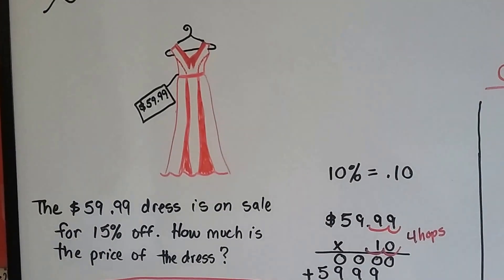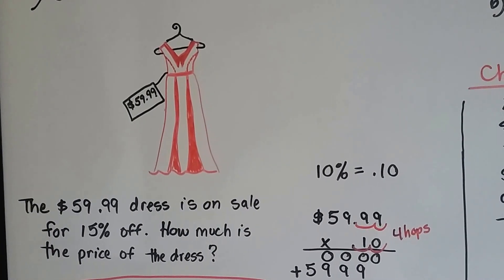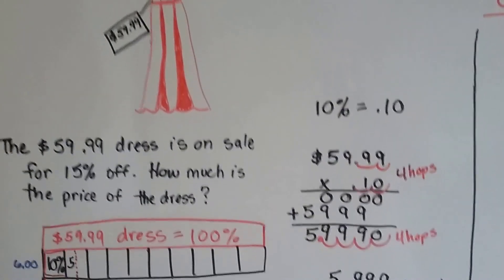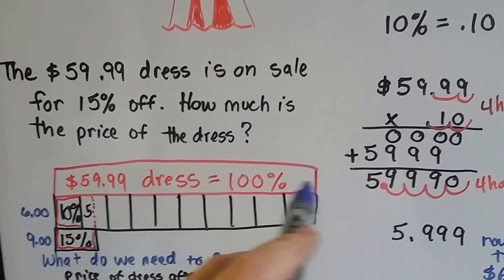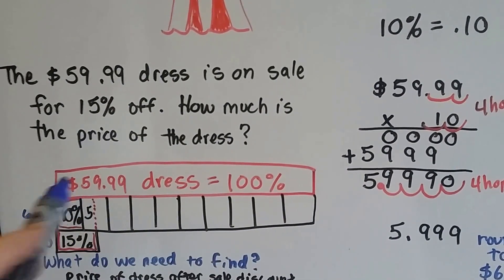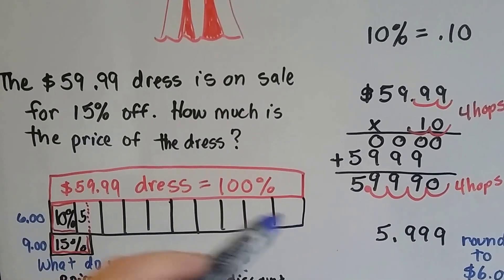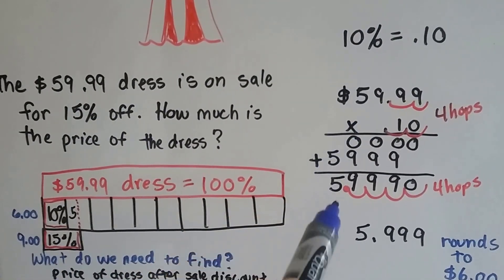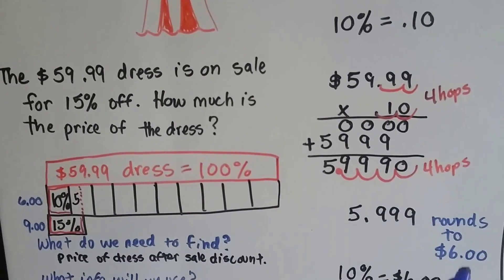The $59.99 dress is on sale for 15% off. So how much is the price of the dress? Well, $59.99 is 100% of the price of the dress. If we break it into 10%, 10% of $59.99 comes out to 5.999. We can round that to $6.